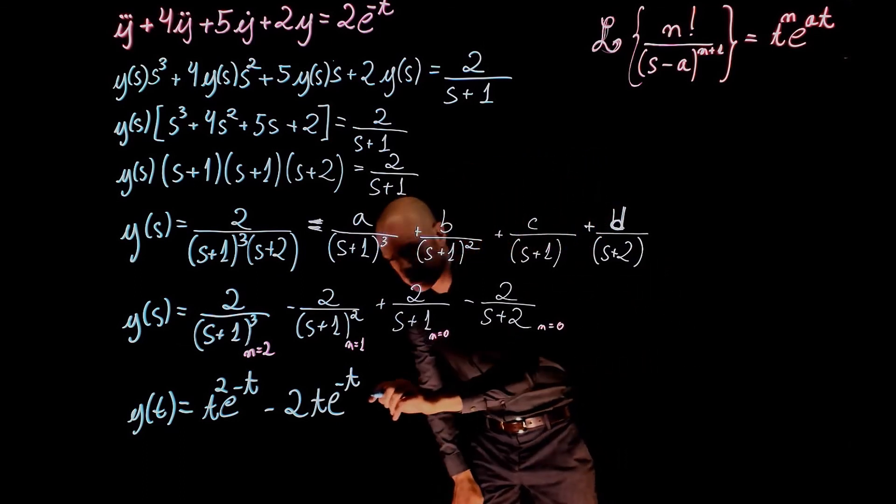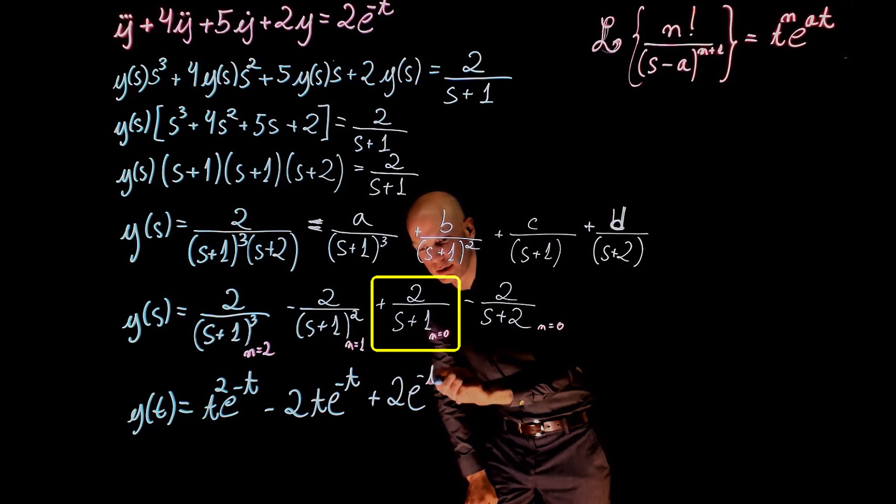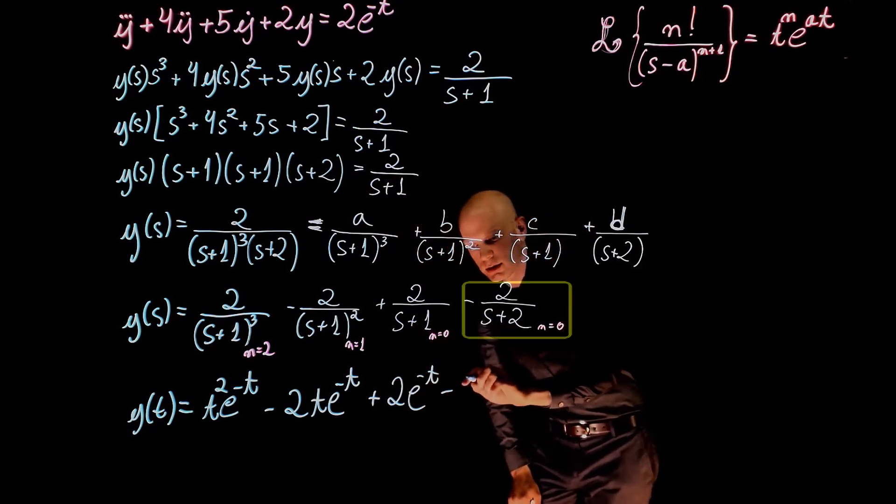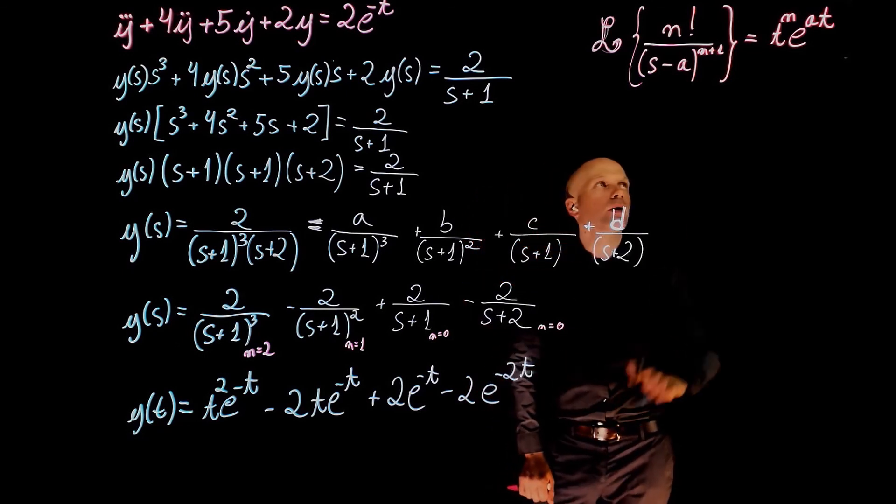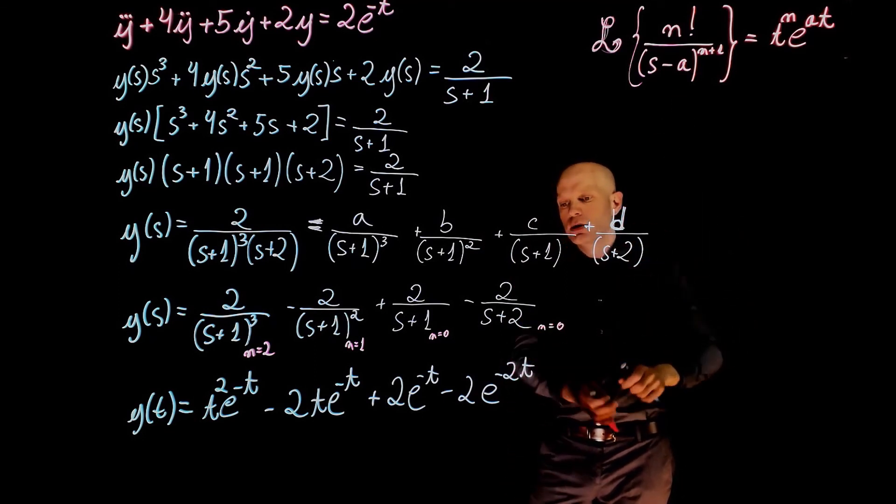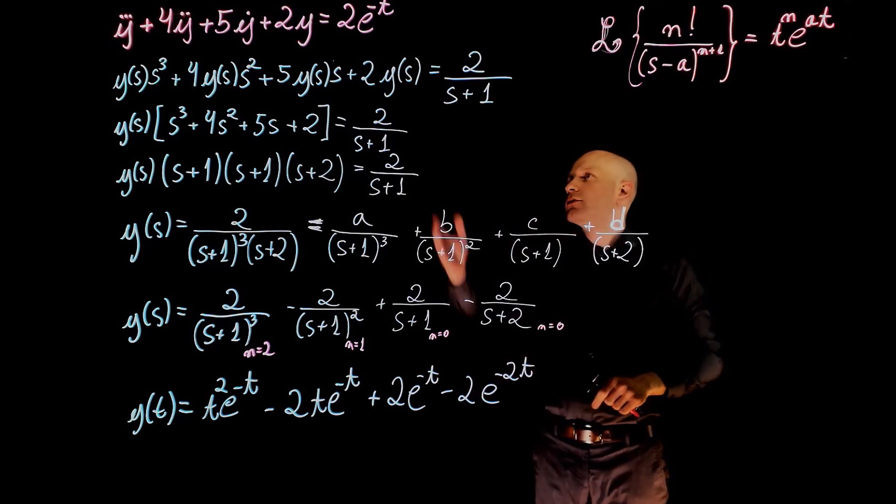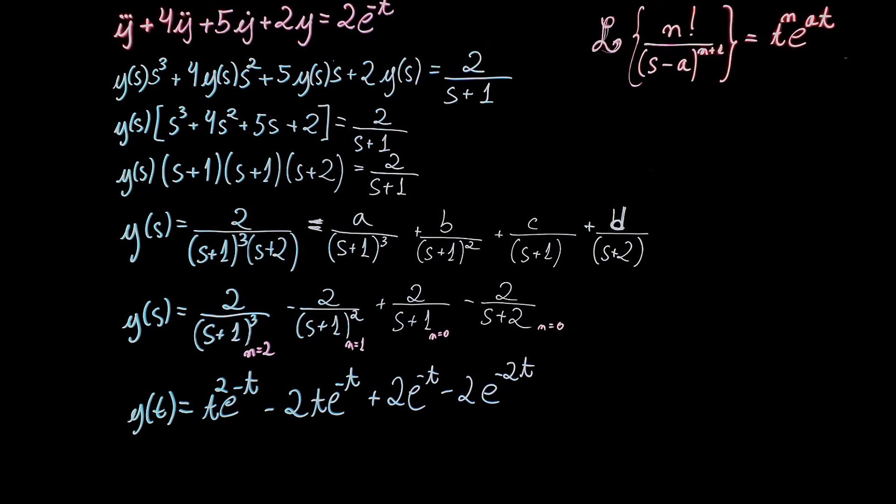The third term is 2 exponential of negative t, or t to the power of 0, that's 1. Minus 2, same thing, exponential in this case, negative 2t. a is negative 2. And this is now the time response of the third order differential equation.